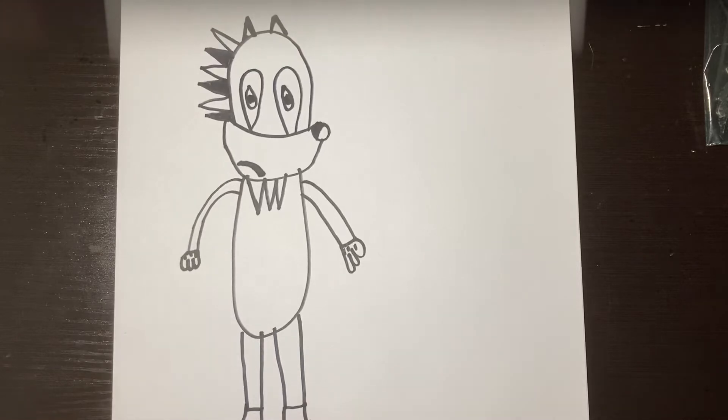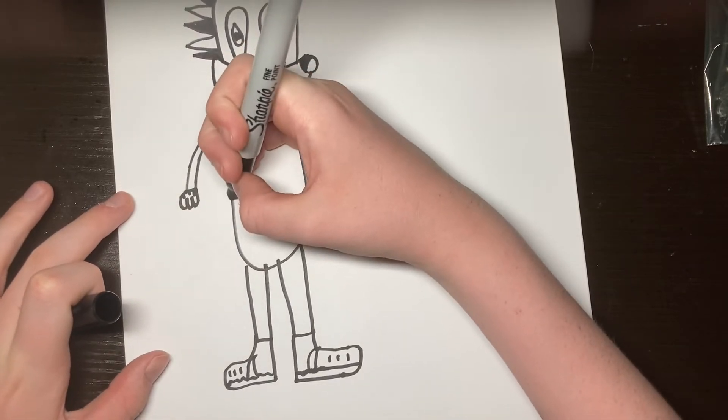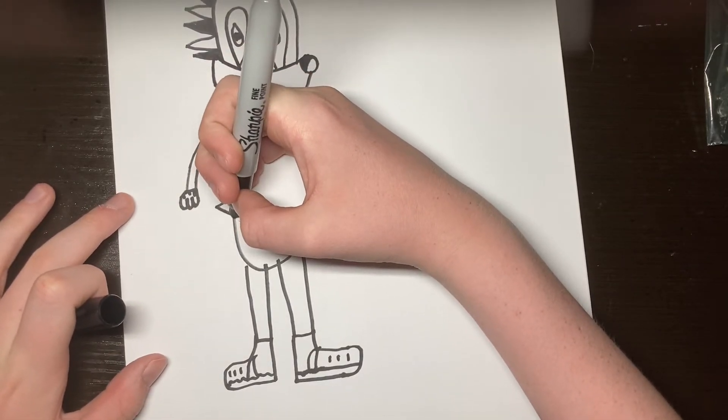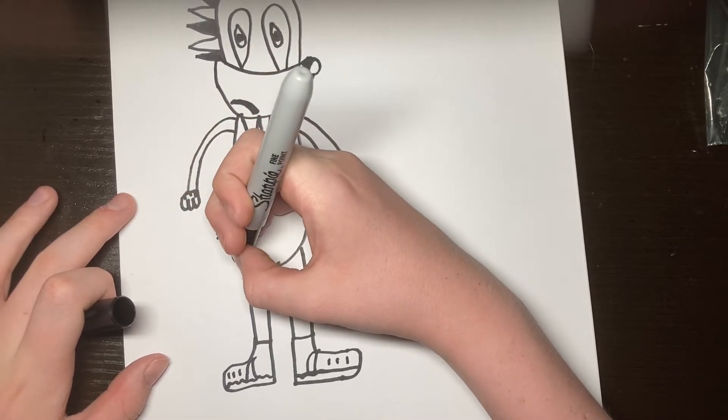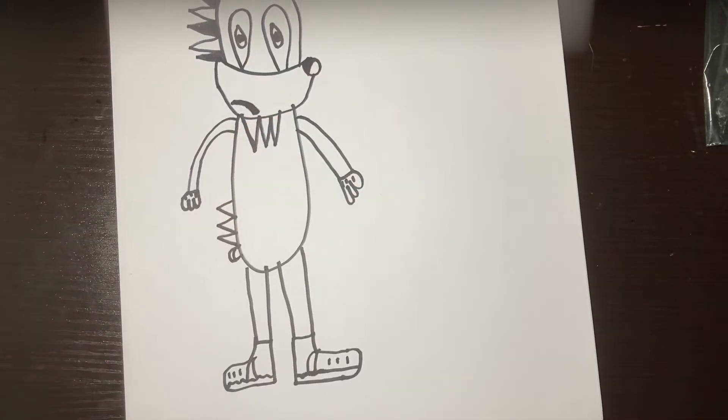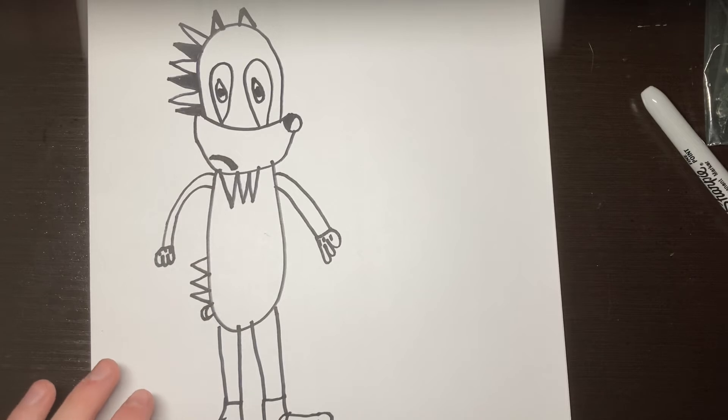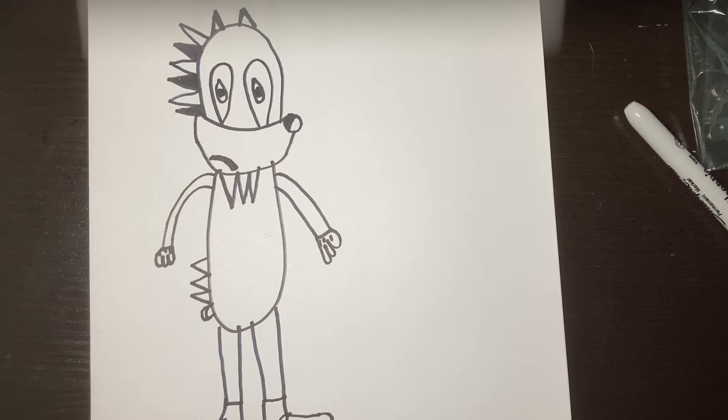That's not also how you draw a shadow too. You also draw him like this. You have spikes on that. And we are going to color him in with color pencils with my trusty colored pencils.